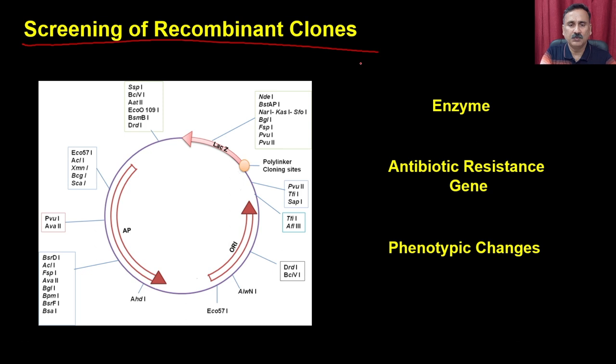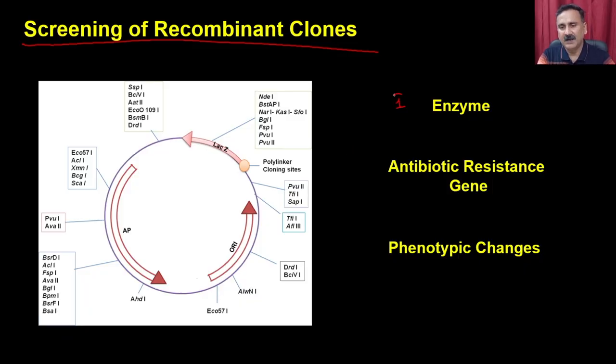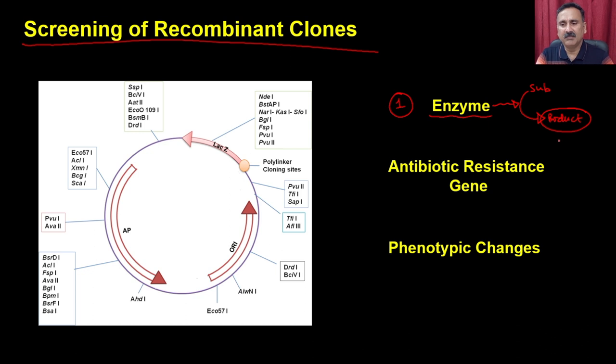Screening of the recombinant clone. You can imagine this is a vector where you might have cloned. This vector is going to provide various exclusive properties that cannot be exhibited by the plain vector but can be exhibited by the recombinant DNA. One screening criterion is that the recombinant clone could express some enzyme that catalyzes a reaction converting substrate into a colored product — green, red, or blue. If this product gives color to the cell, then blue-colored cells are transformed or have taken up the exogenously added DNA.